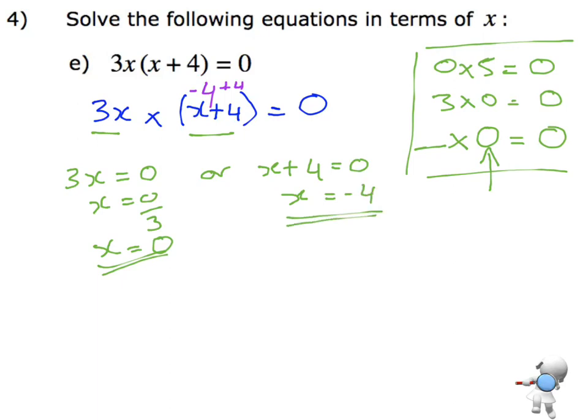So there are those resolutions. Now in order to check, if I was to put those back in, so if I was to substitute x equals 0 into the equation, I would get 3 times 0 times 0 plus 4. And then 3 times 0 is 0. 0 times 4 is 0.